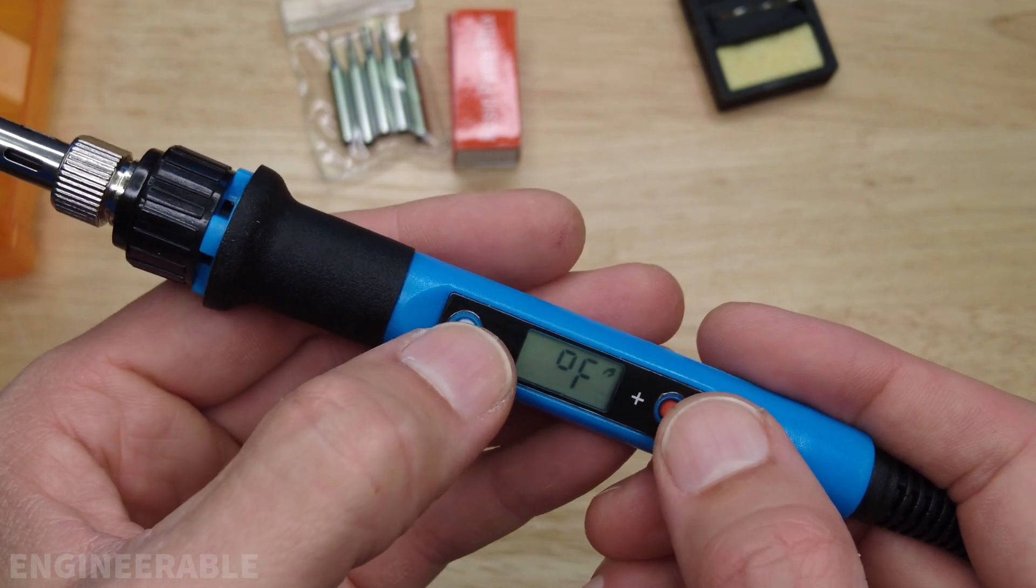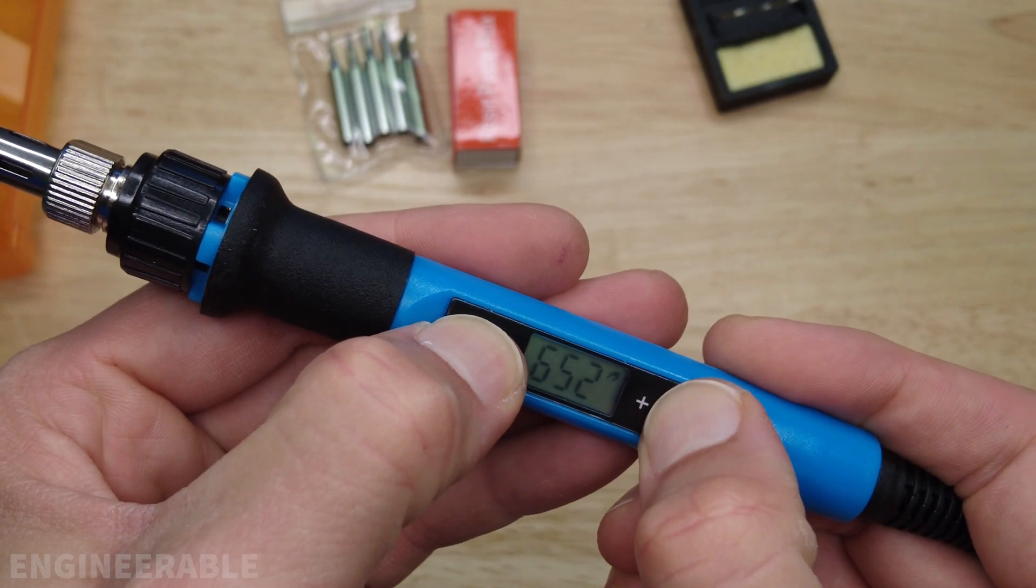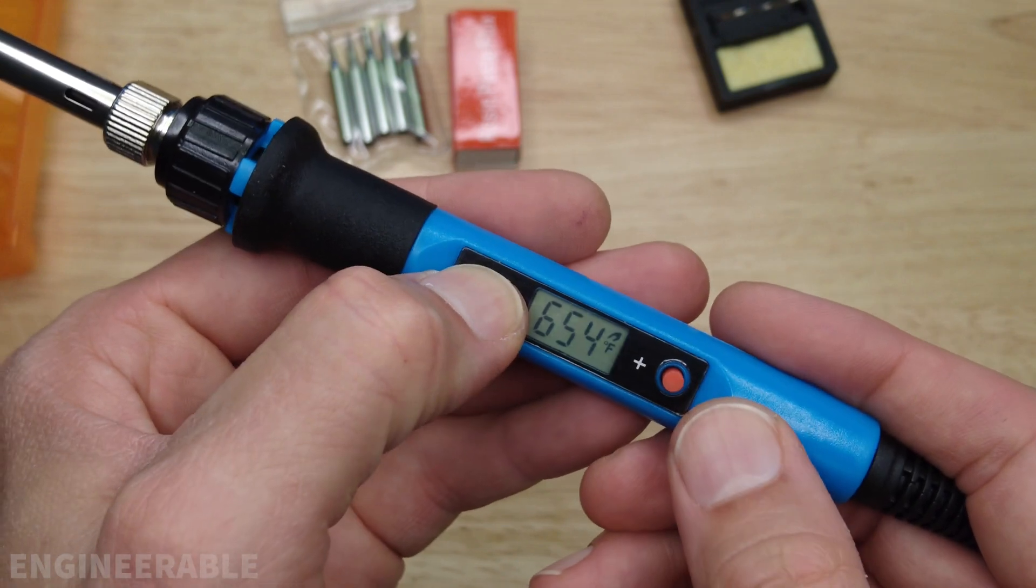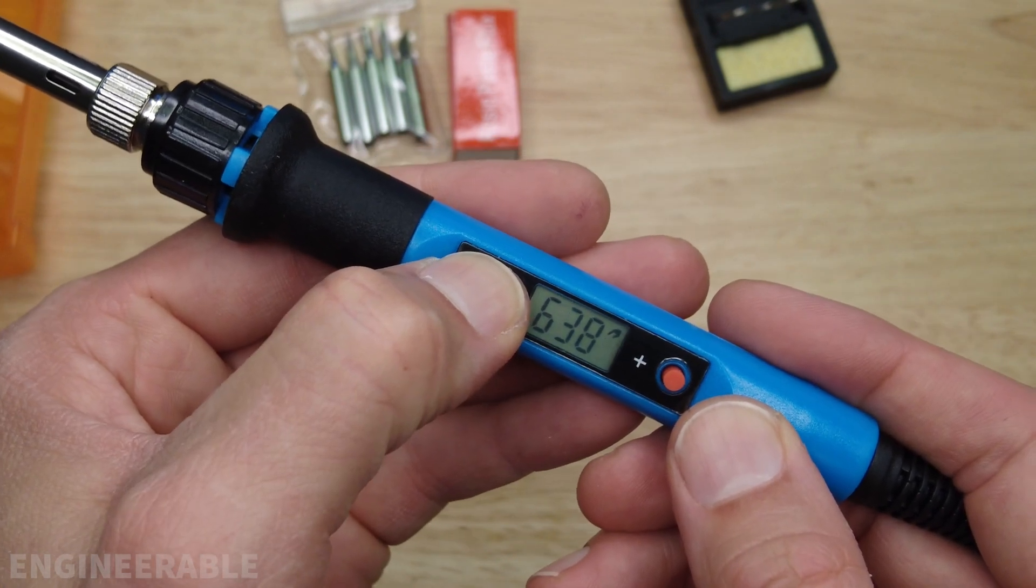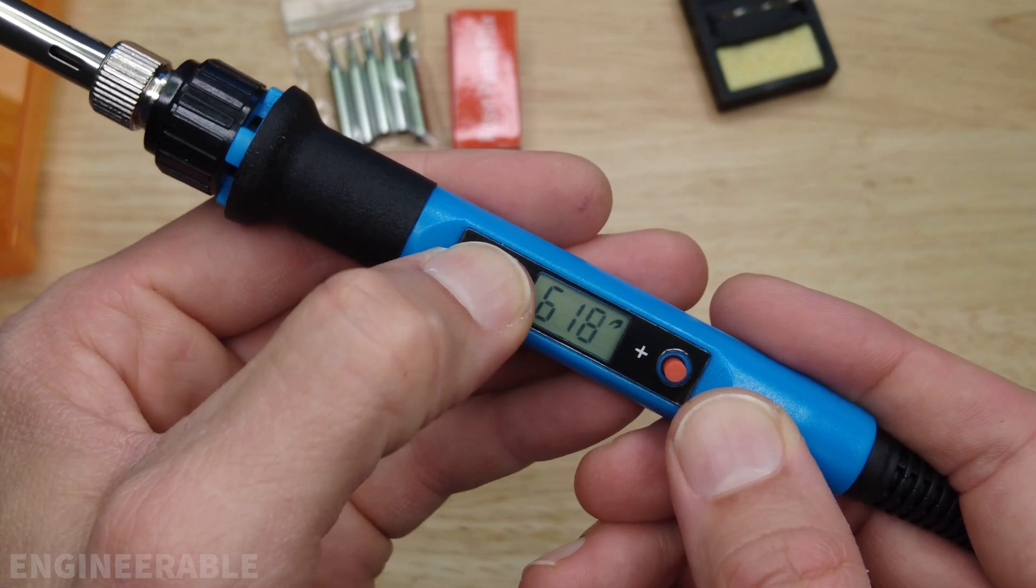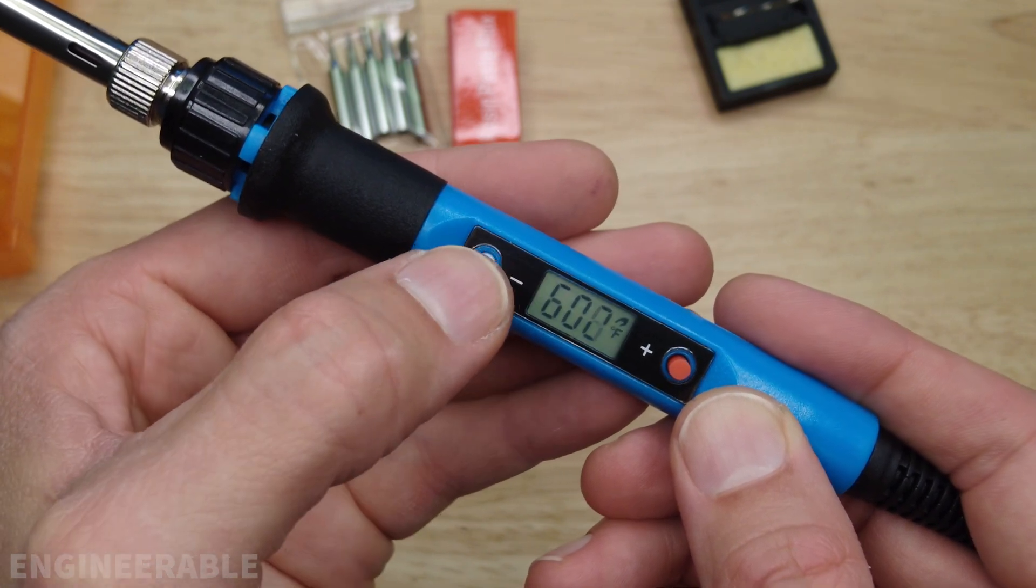Now you push both and hold both buttons. There you go, now it's in the temperature adjust mode. So I usually solder right around 600F, that's a general good temperature for soldering.